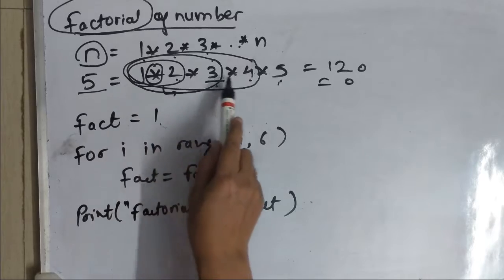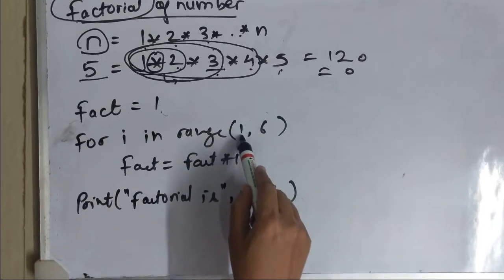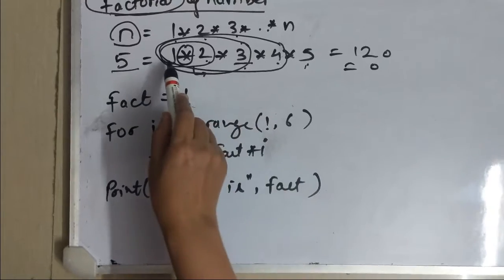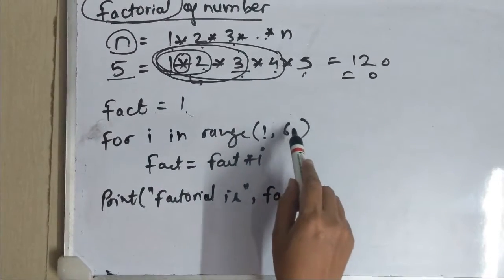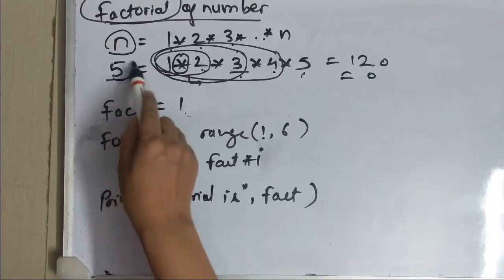The starting value should be 1 because we are beginning the multiplication from 1 and the ending value should be 1 greater than the number whose factorial we want to find.